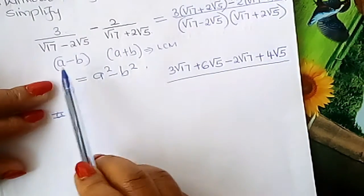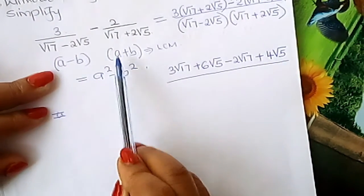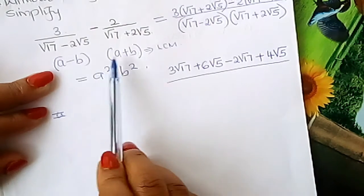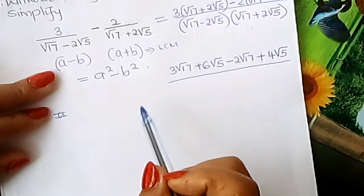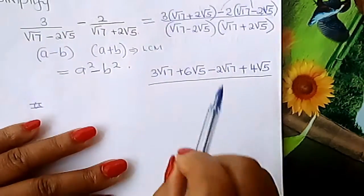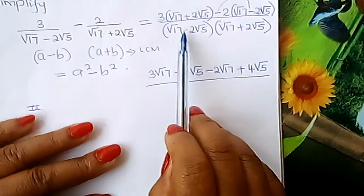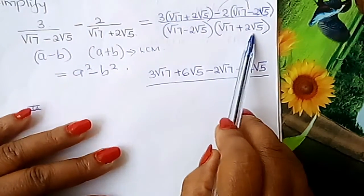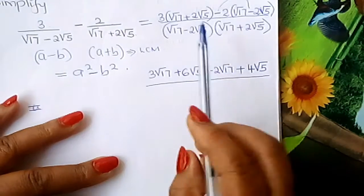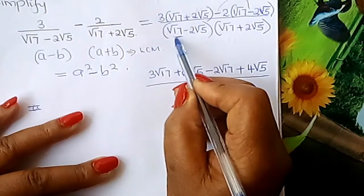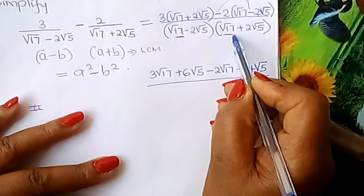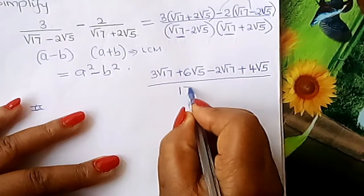So it works like this: a times a gives a squared, b times b gives b squared, then you put a negative between them. We apply the same here — you don't need to keep removing brackets using this identity.